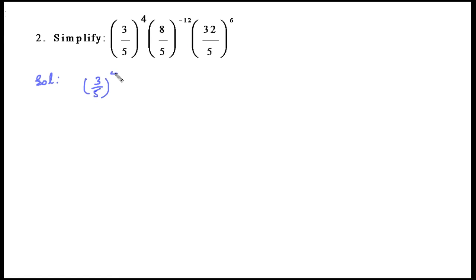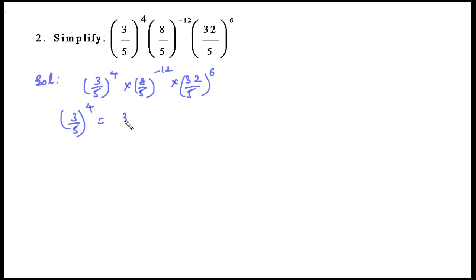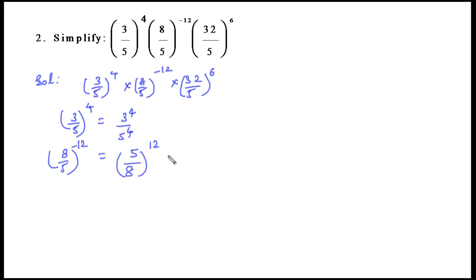The second question: simplify (3/5)^4 × (8/5)^(−12) × (32/5)^6. We write (3/5)^4 as 3^4 / 5^4. For (8/5)^(−12), the negative exponent gives (5/8)^12 = 5^12 / 8^12. Since 8 = 2^3, this equals 5^12 / 2^36.